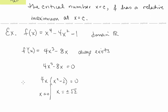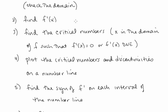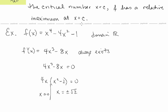Let's look at the example f(x) = x⁴ - 4x² - 1. Step 1: This is a polynomial, so its domain is all reals — no discontinuities. Step 2: f'(x) = 4x³ - 8x. Step 3: The derivative always exists, so we set f' = 0. Factoring gives 4x(x² - 2) = 0, so x = 0 and x = ±√2 are our critical numbers.